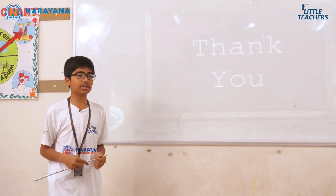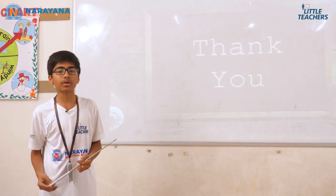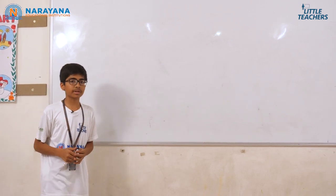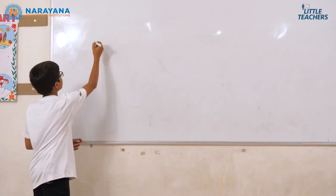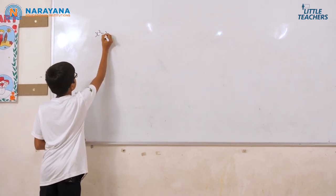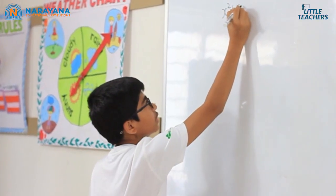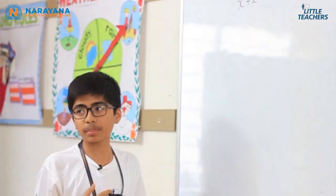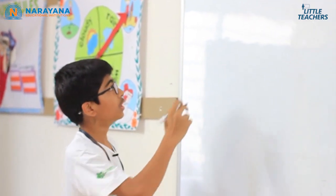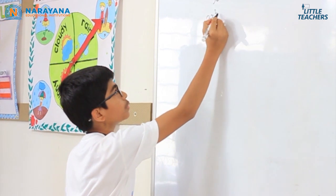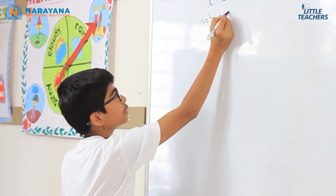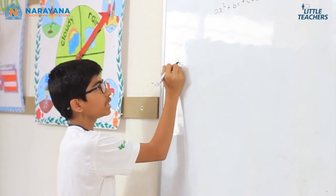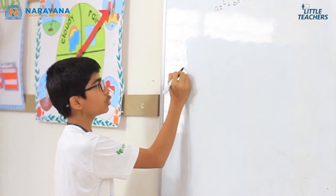Now let us try solving an example. Let us take x² + x − 6 = 0. This is in the form ax² + bx + c = 0, where a = 1, b = 1, and c = −6.